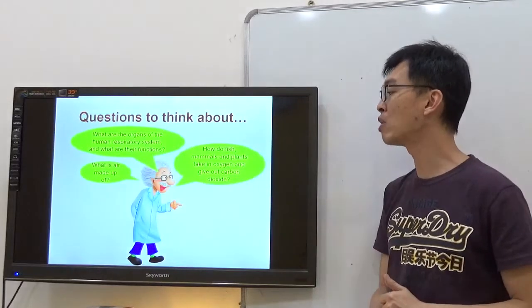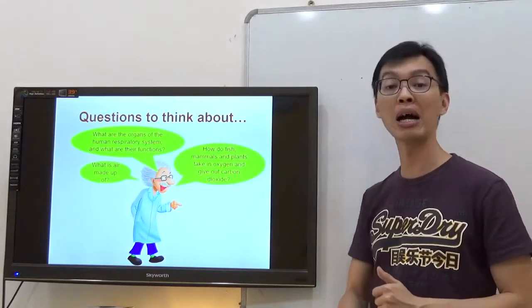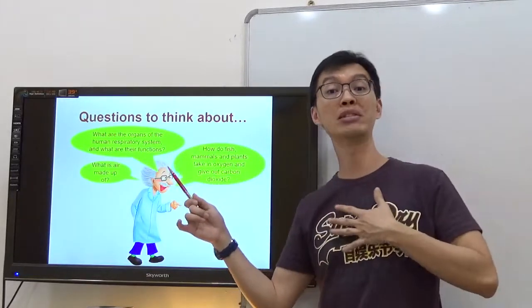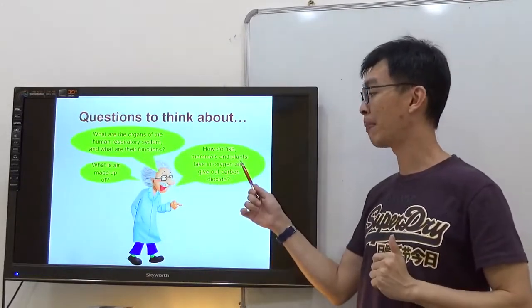How do fish, mammals and plants take in oxygen and give out carbon dioxide? Now we're going to talk about mammals, mostly talking about us and then plants.